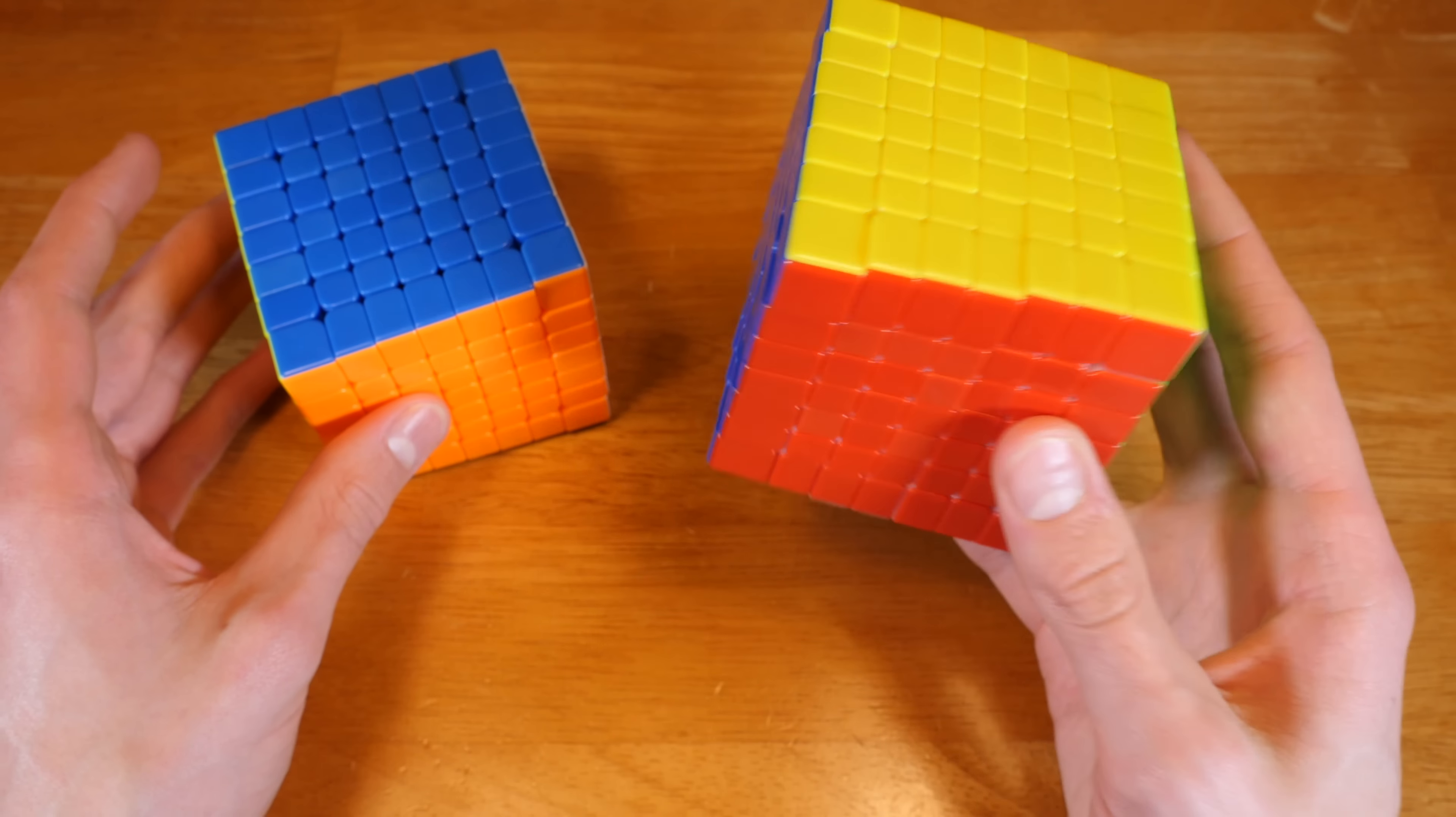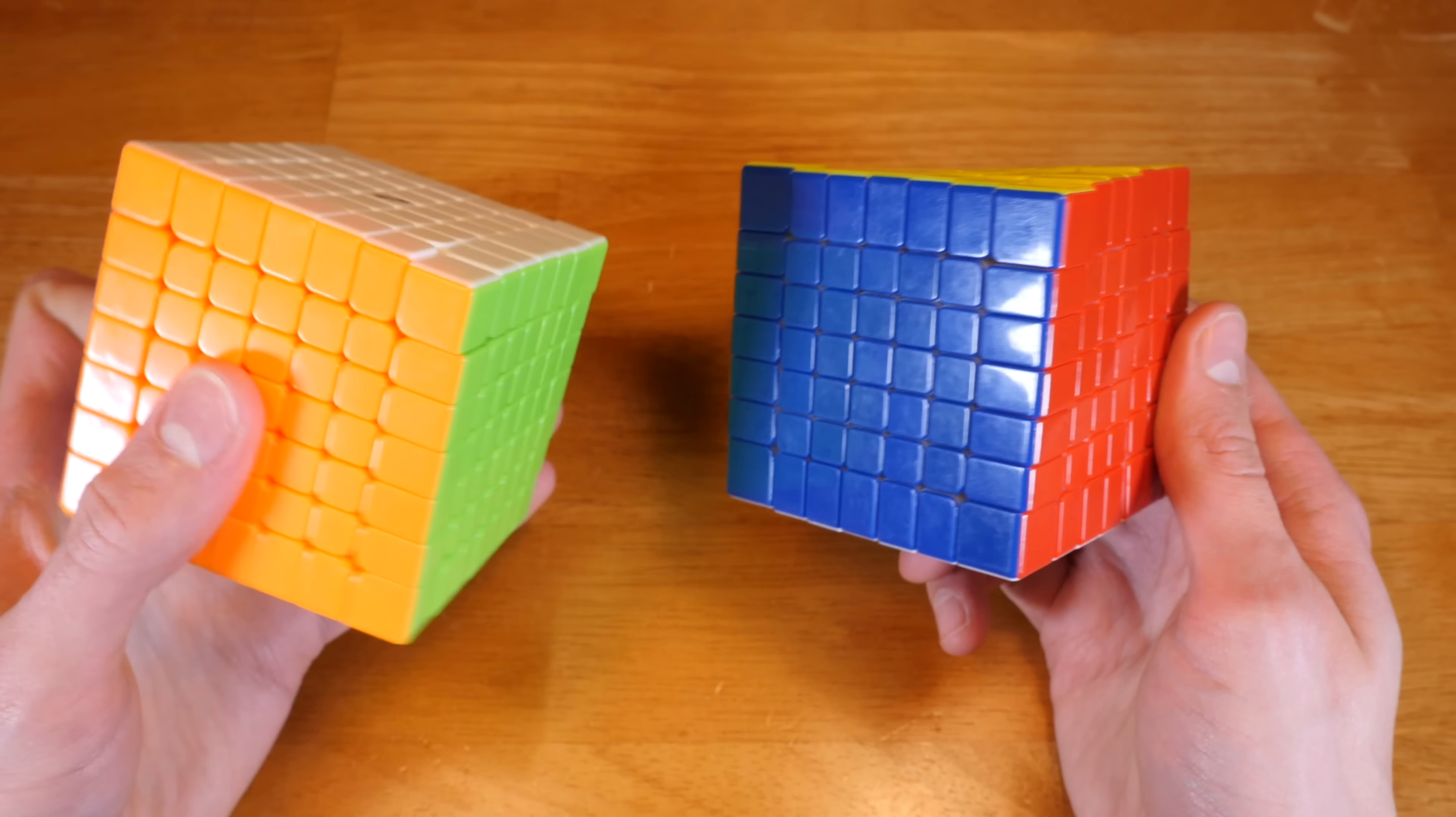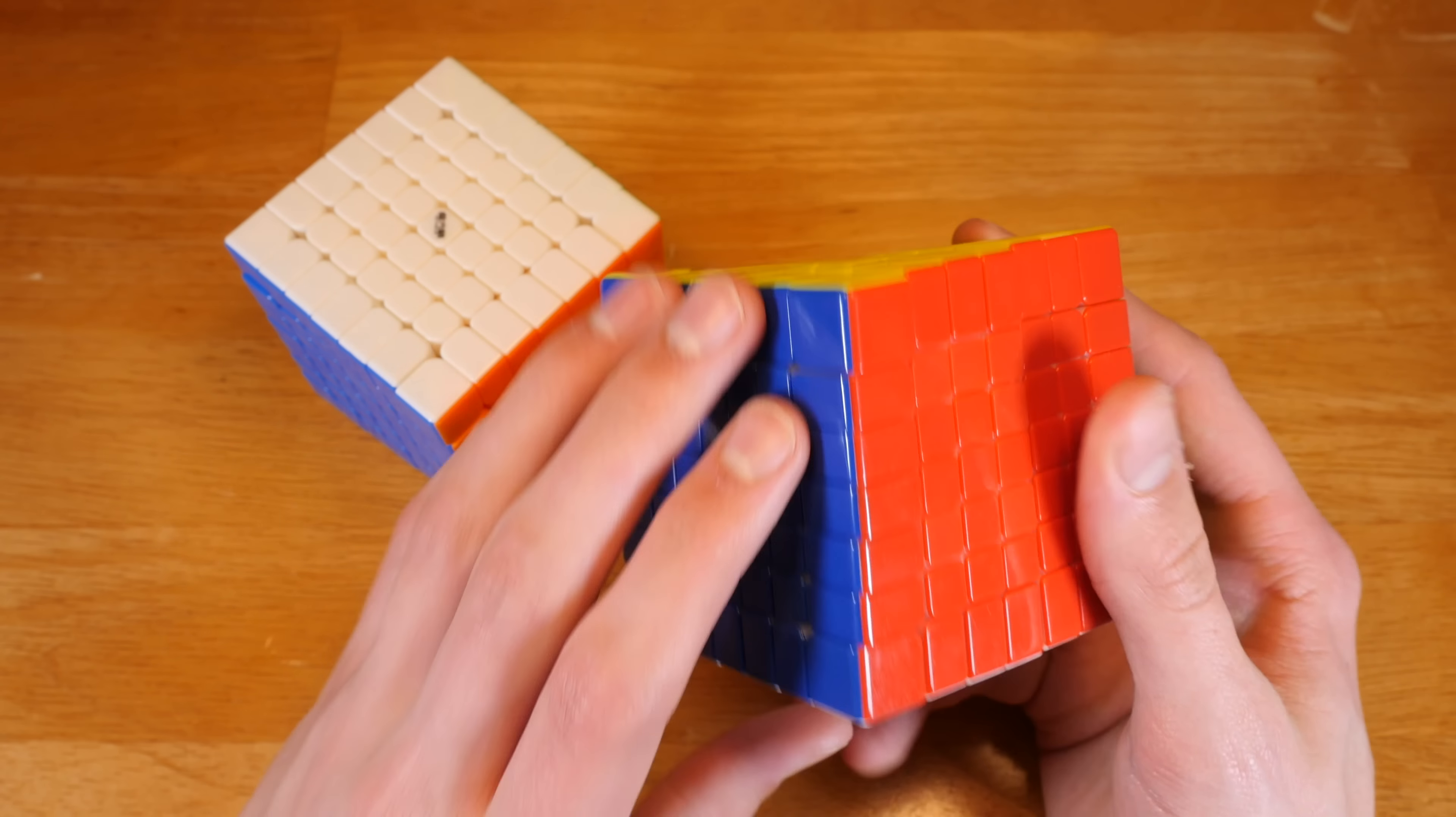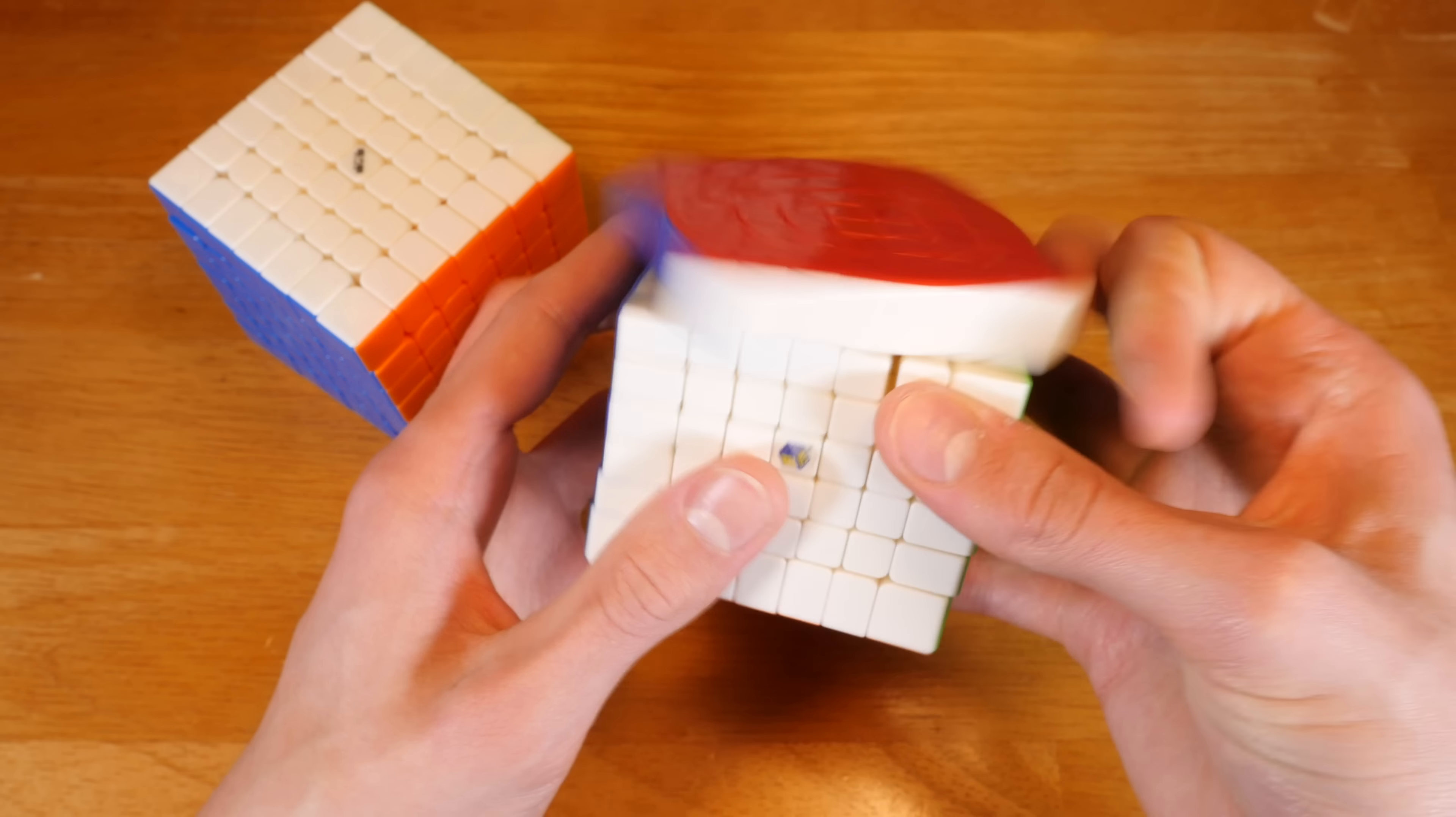I would get the Yuxin if you're looking for a nice smooth cube. It is slightly cheaper than the ChiChi, but I don't think that should be a factor here. They are almost the same price.